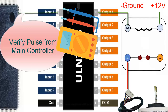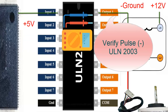ULN2003 circuit failure: in this case, the integrated circuit can be changed. To diagnose, it is necessary to measure with a multimeter if there is an output pulse on the ULN2003 when activated by the main controller. Look for the ULN2003 output that controls the relay you are interested in.